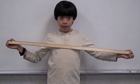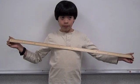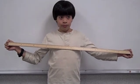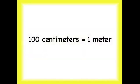A meter is too big to measure small things, but we can divide a meter into smaller pieces called centimeters. There are 100 centimeters in one meter.